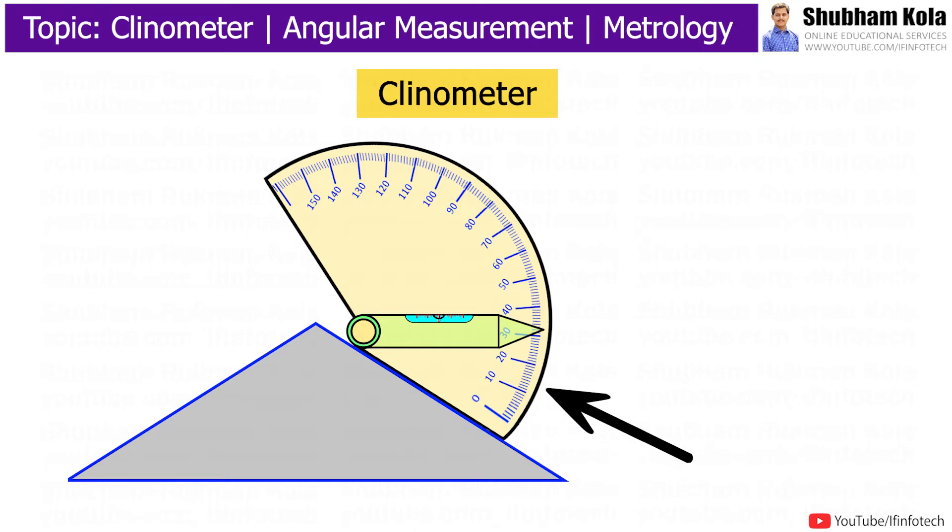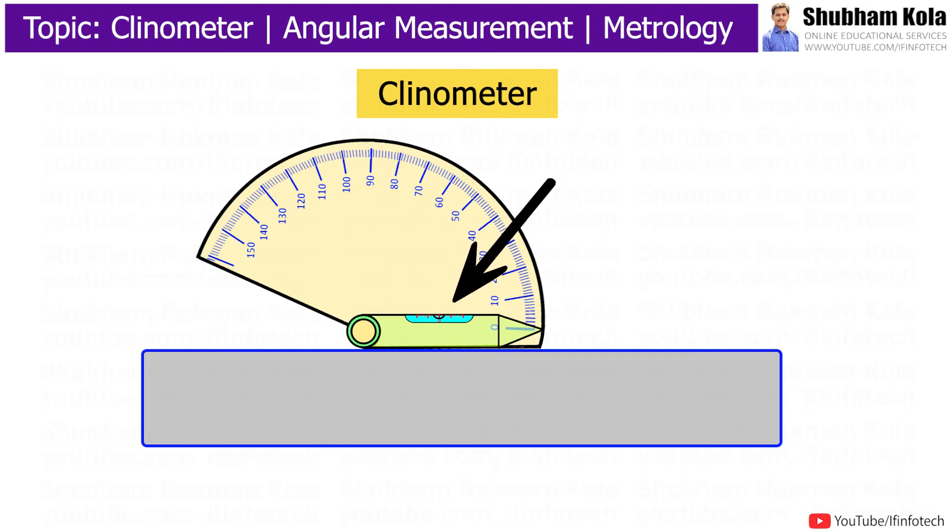The main functional element of clinometer is the spirit level mounted on rotary member which carries graduated ring with its horizontal axis. The bubble of spirit level is in its center position when clinometer is placed on horizontal surface and the scale of rotary member is at zero position.